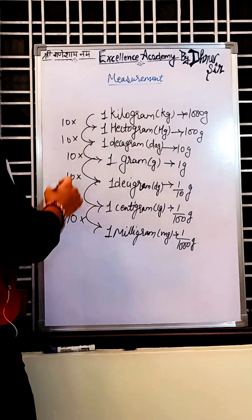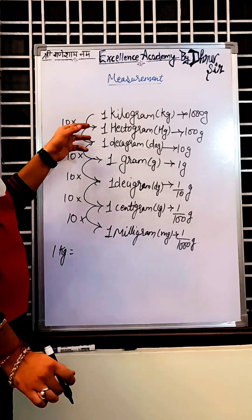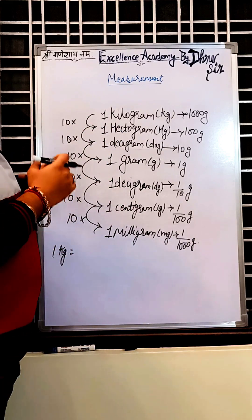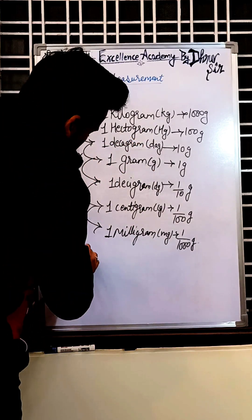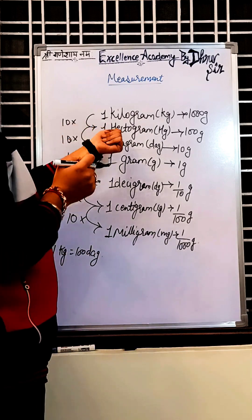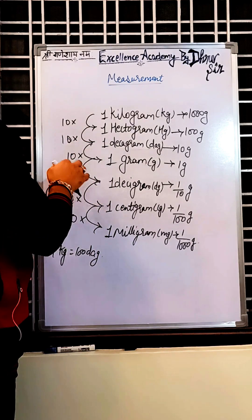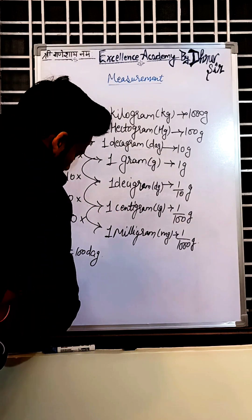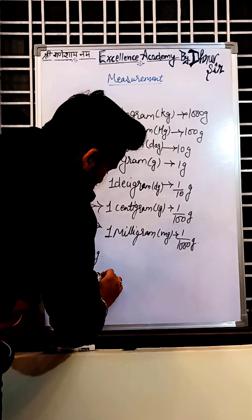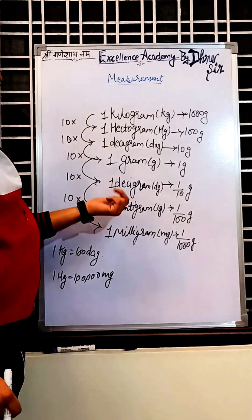Question: In 1 kilogram, how many decagrams are there? We count the steps from kg to dag — that is 2 steps, so 10 × 10 = 100. There are 100 decagrams in 1 kg. Another question: In 1 hectogram, how many milligrams are there? We move 5 steps, so 10×10×10×10×10 = 1 lakh. There are 1 lakh milligrams in 1 hectogram.